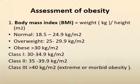Obesity is classified into three classes. Class 1 represents a BMI ranging from 30 to 34.9. Class 2 ranges from 35 to 39.9. Class 3 is above 40 kg/m², which is also called extreme or morbid obesity.